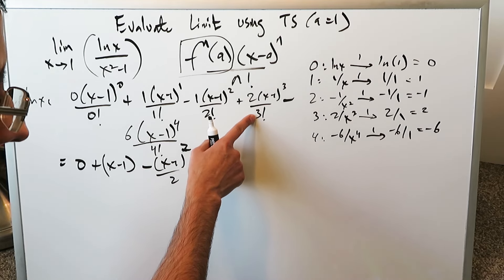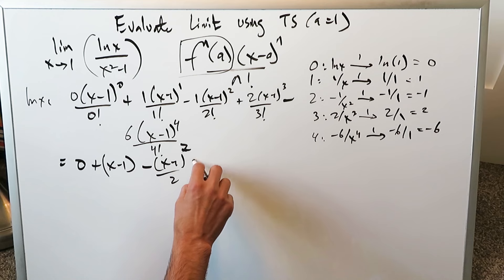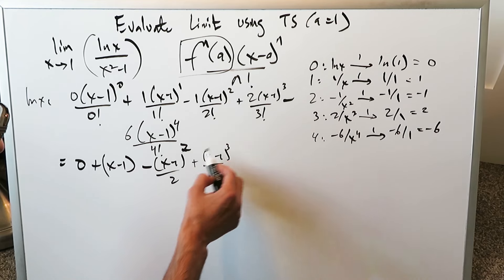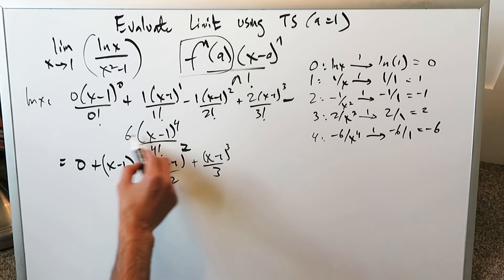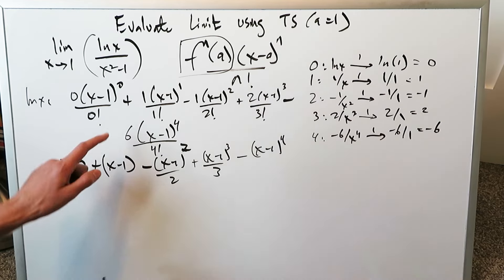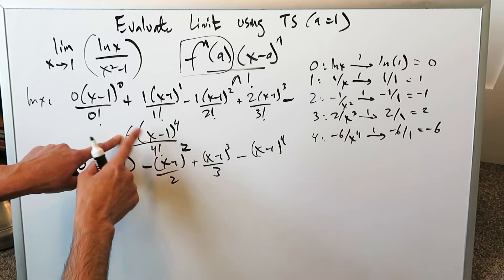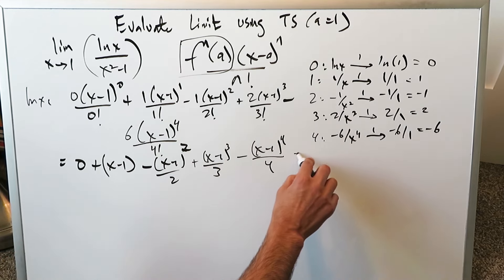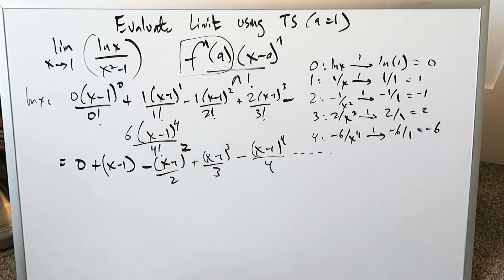Look over here. 2 divided by 6, which is 3 factorial, you can simplify that. It'll be x minus 1 cube over 3. 2 divided by 6 is 1 over 3. Last item right over here, minus x minus 1 to the power of 4. You have 6 divided by 4 factorial, 6 over 24, that's 1 over 4. That's my expansion and you know it would continue on, but I've limited everything here to n equals 4.